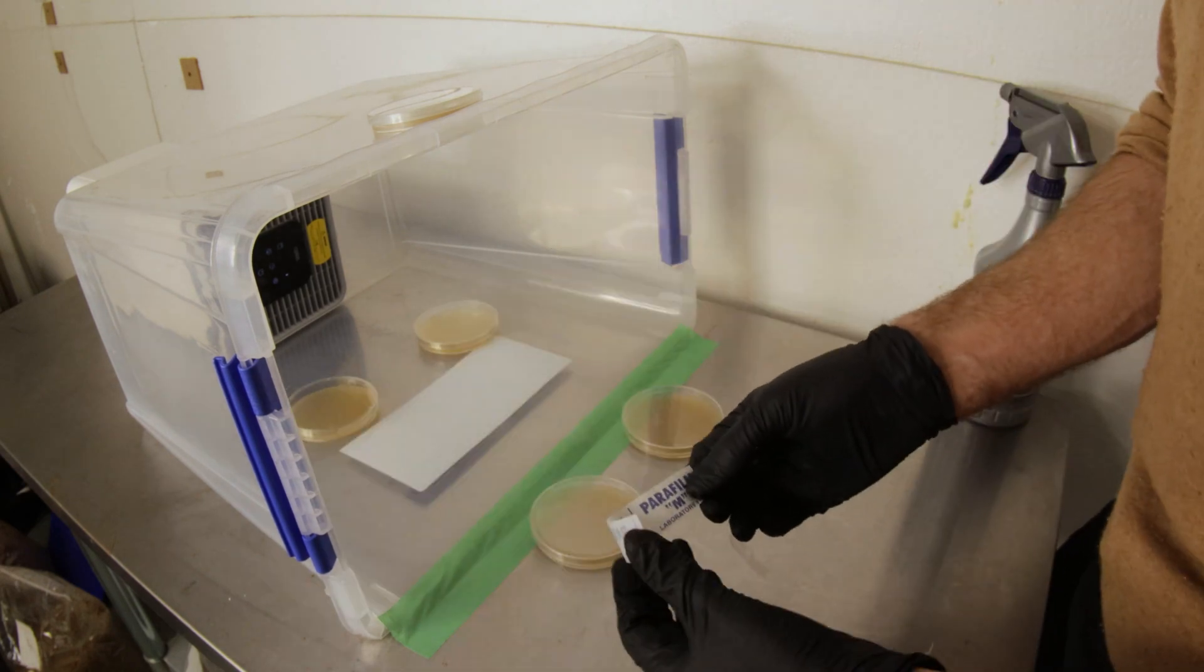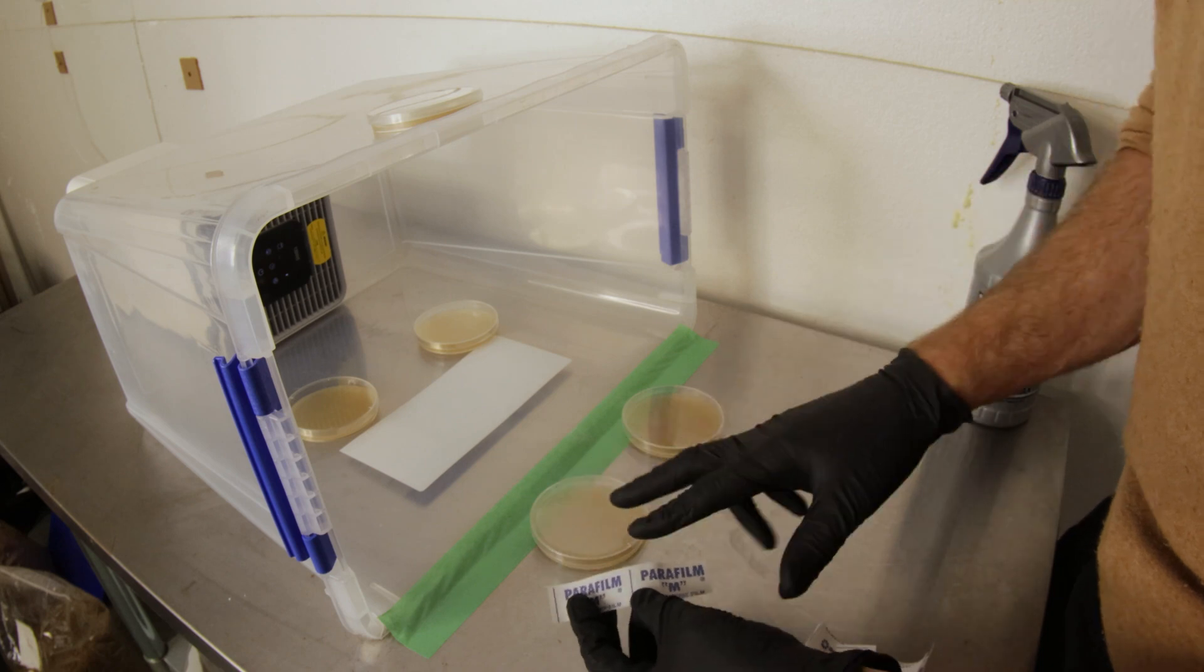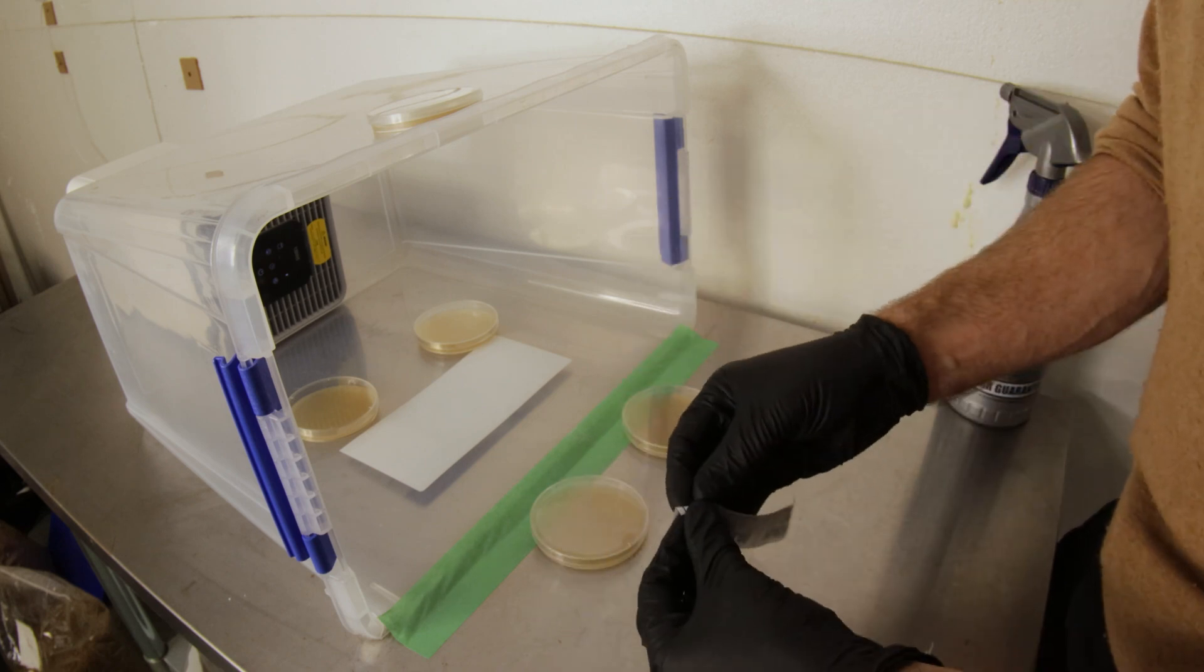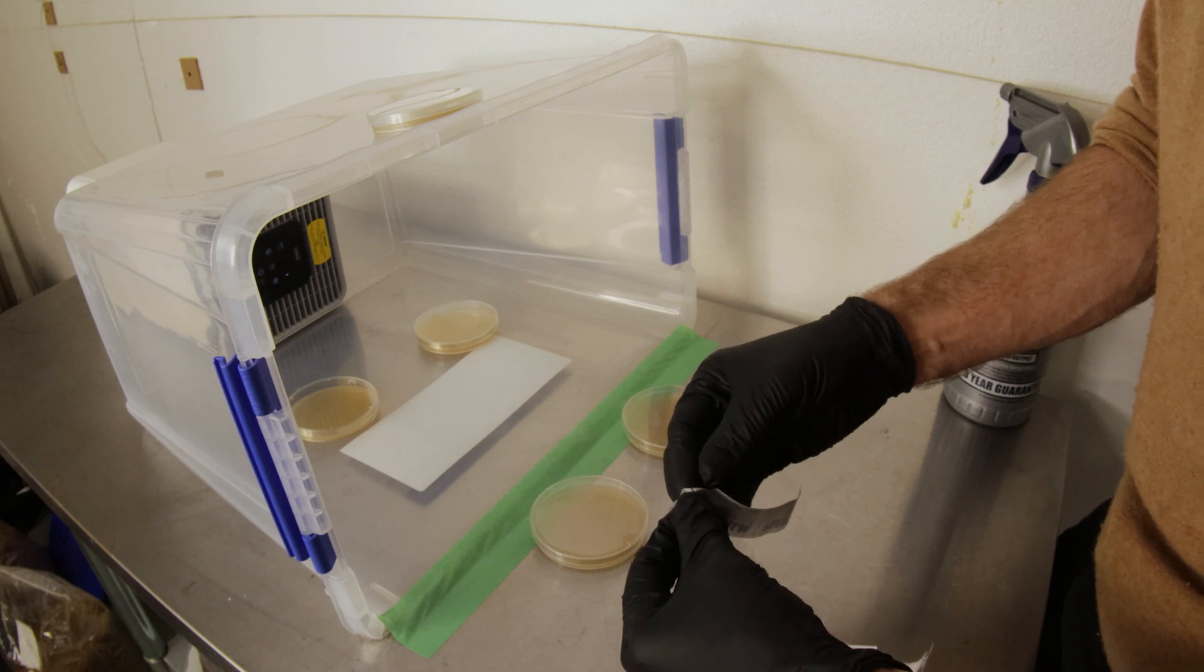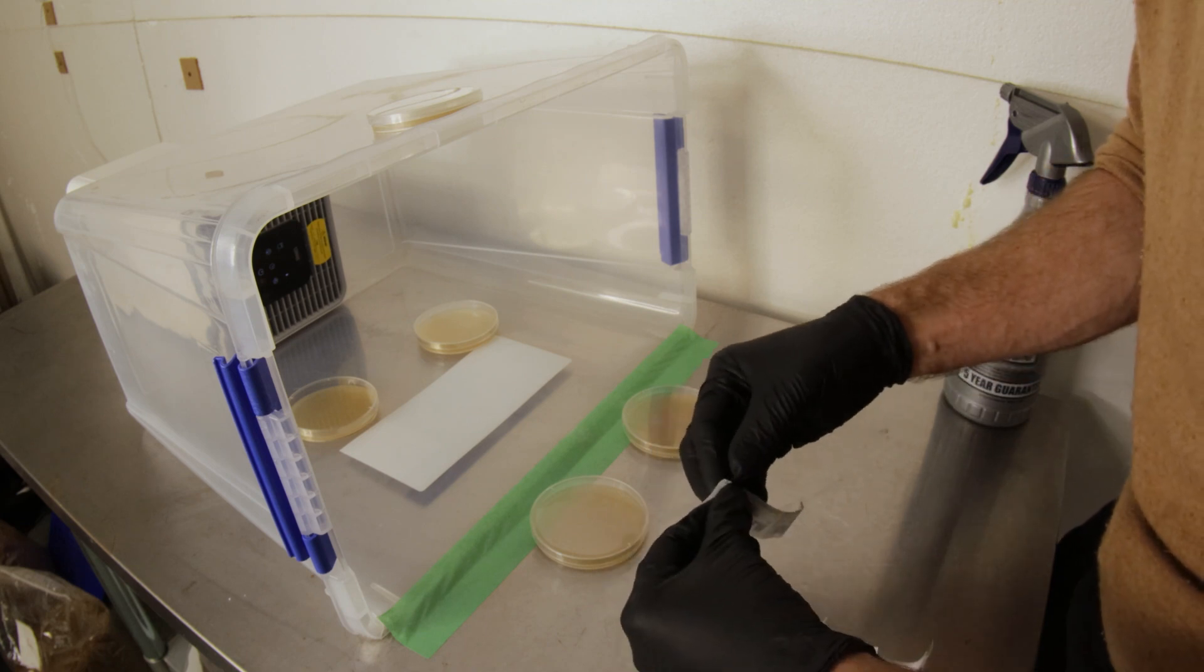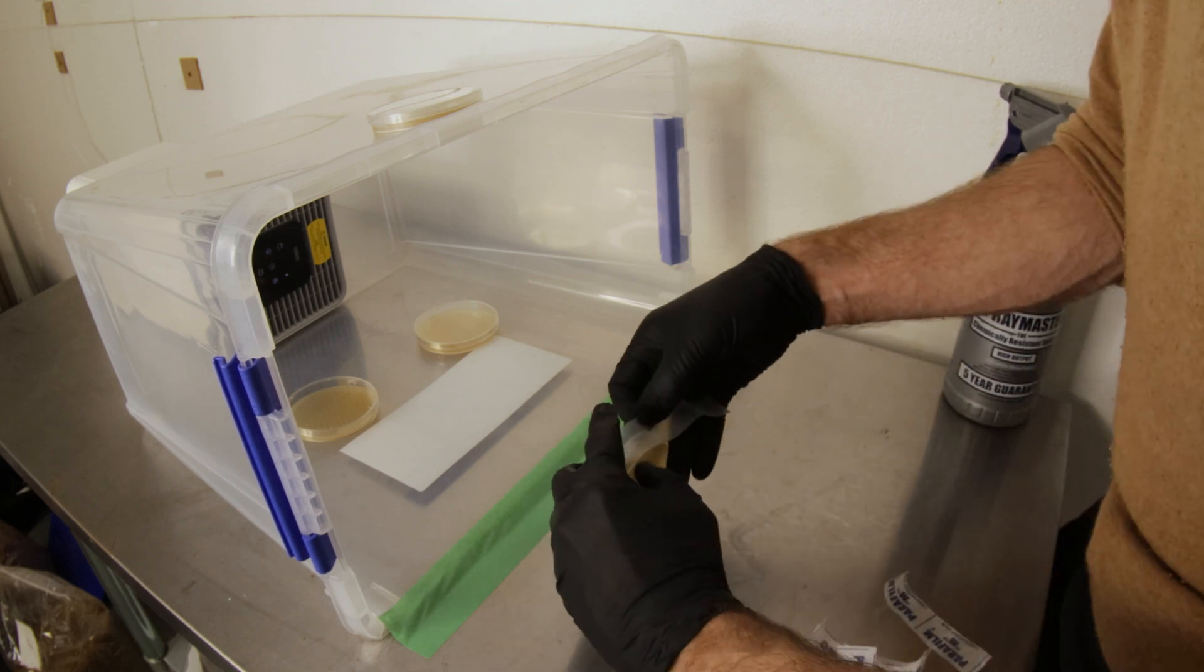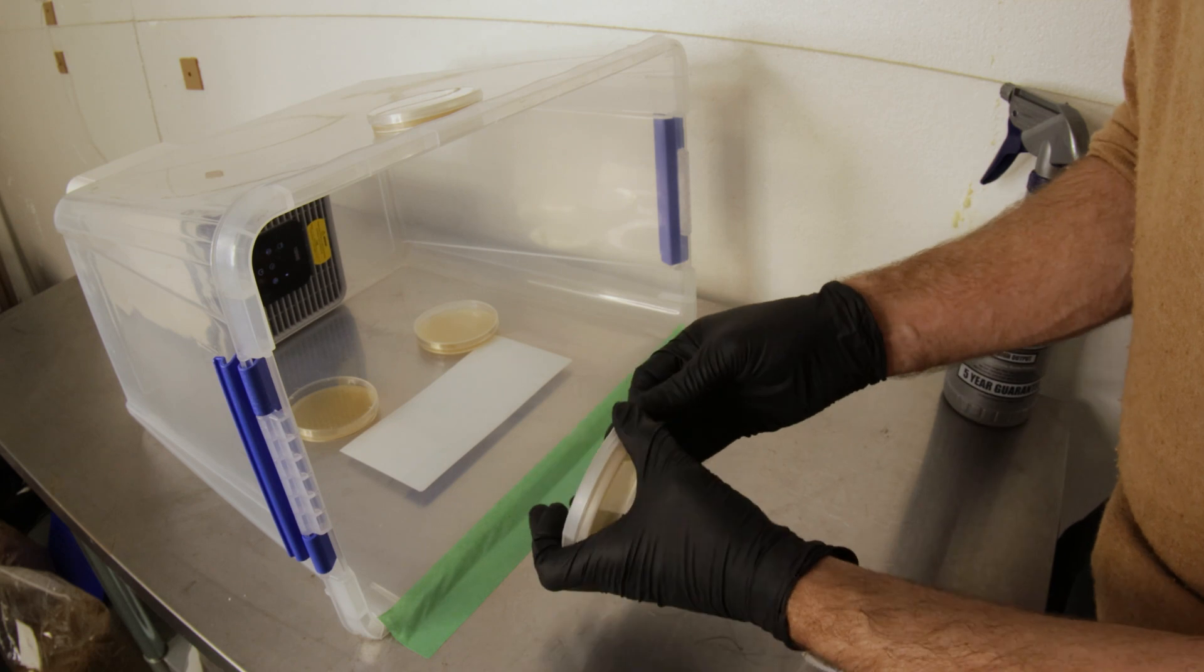To cover them I use parafilm. I actually get the one that's wider and I cut it into thin pieces like that. Some people use the long strips. But I think this is the most efficient way for plates. You don't need a lot on there. Some people overdo it I think. We'll just go around like that there.